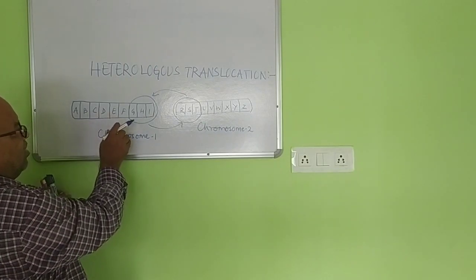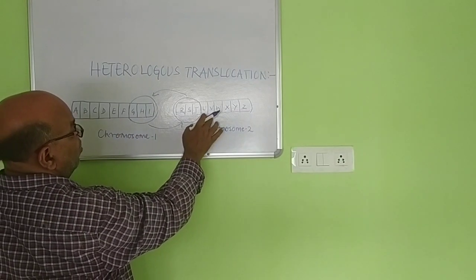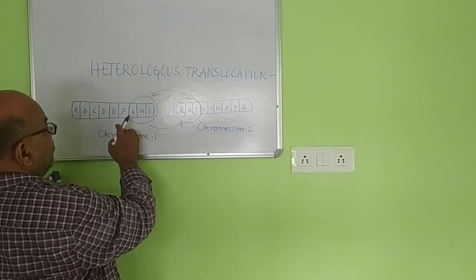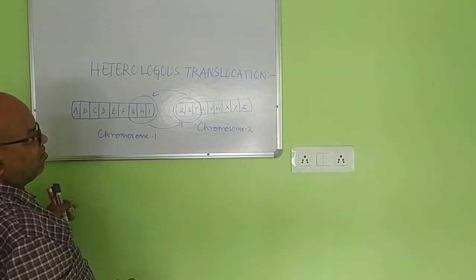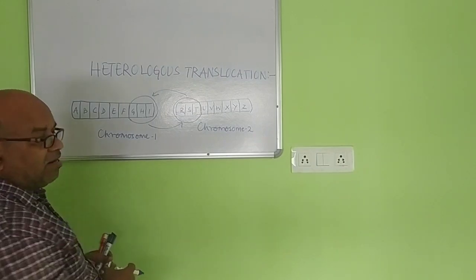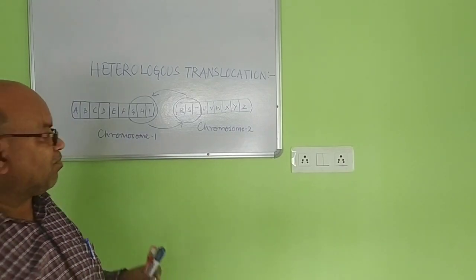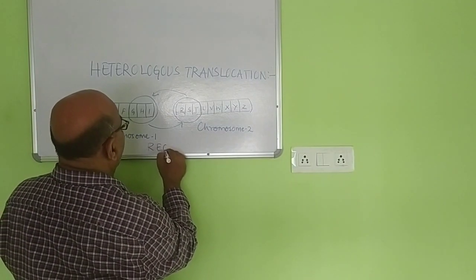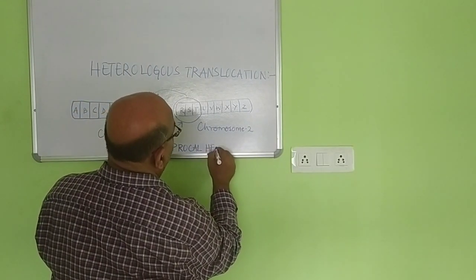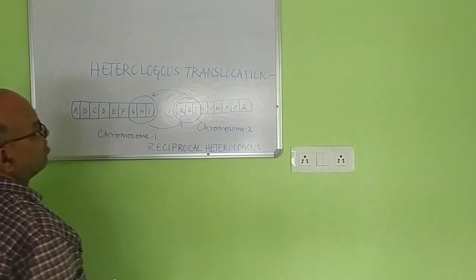Chromosome 2 generally shifts some genes as a segment from it to chromosome 1, and chromosome 1 also shifts RST genes as a fragment to chromosome 2. This type of translocation is called reciprocal heterologous translocation.